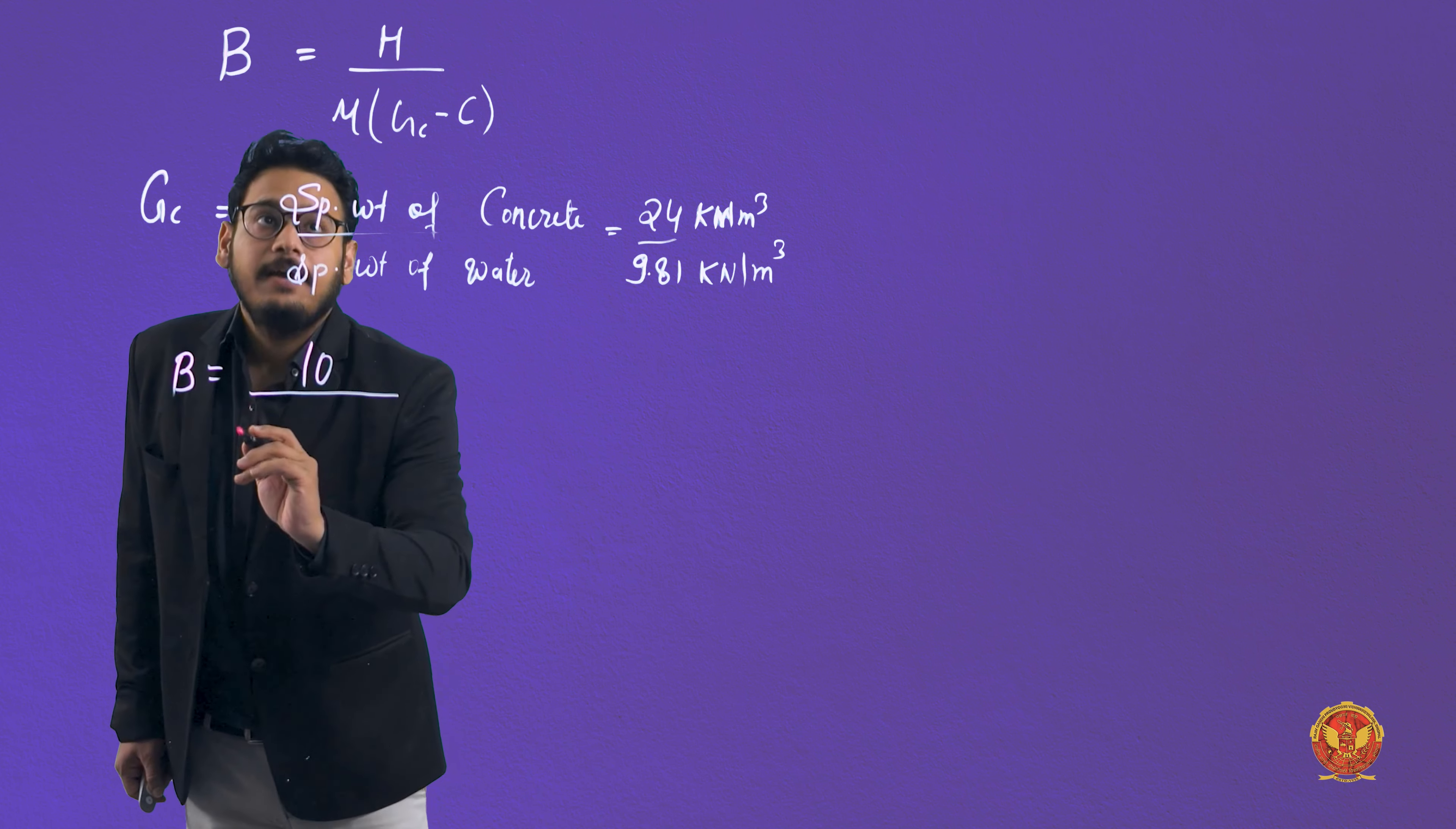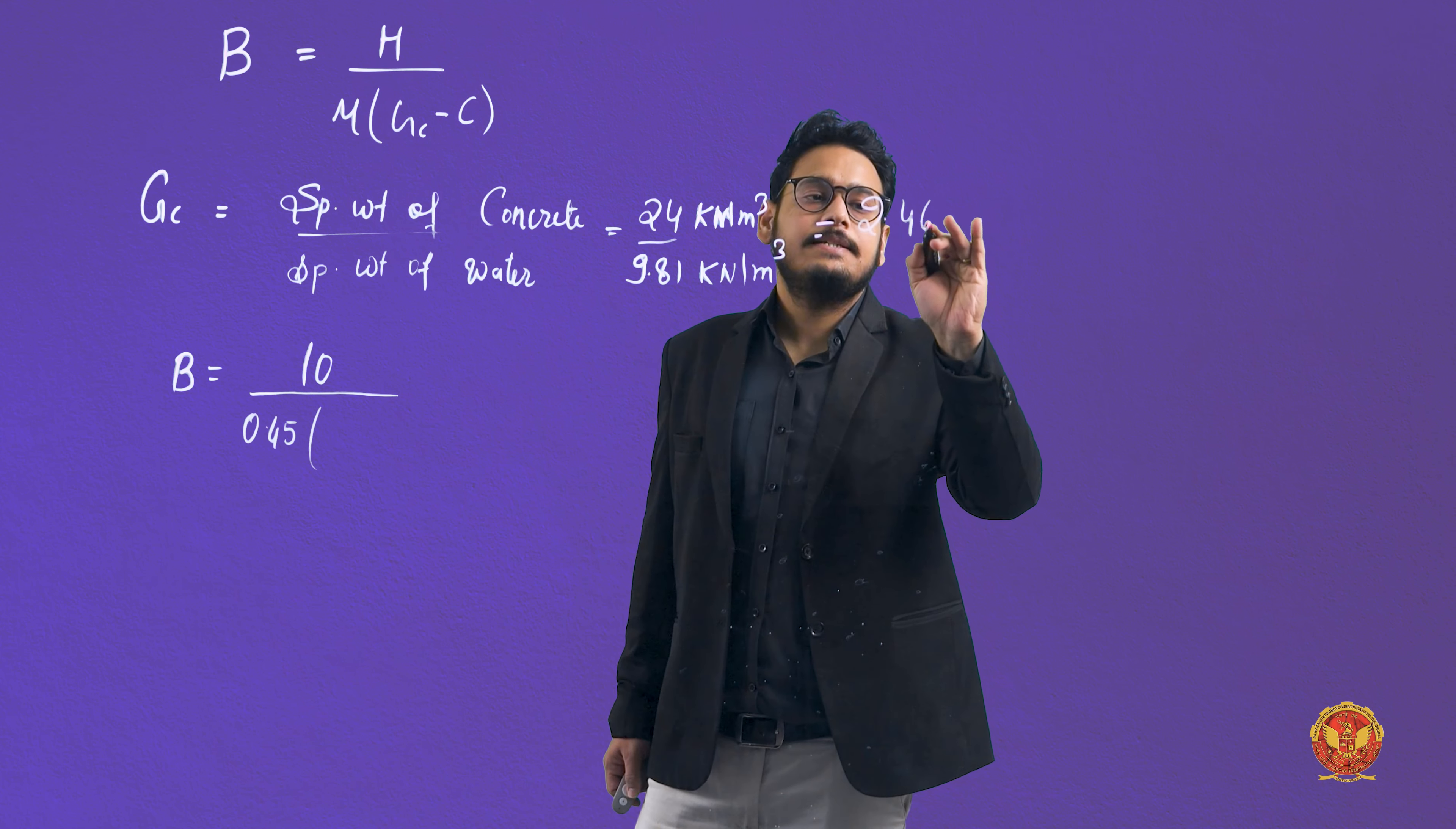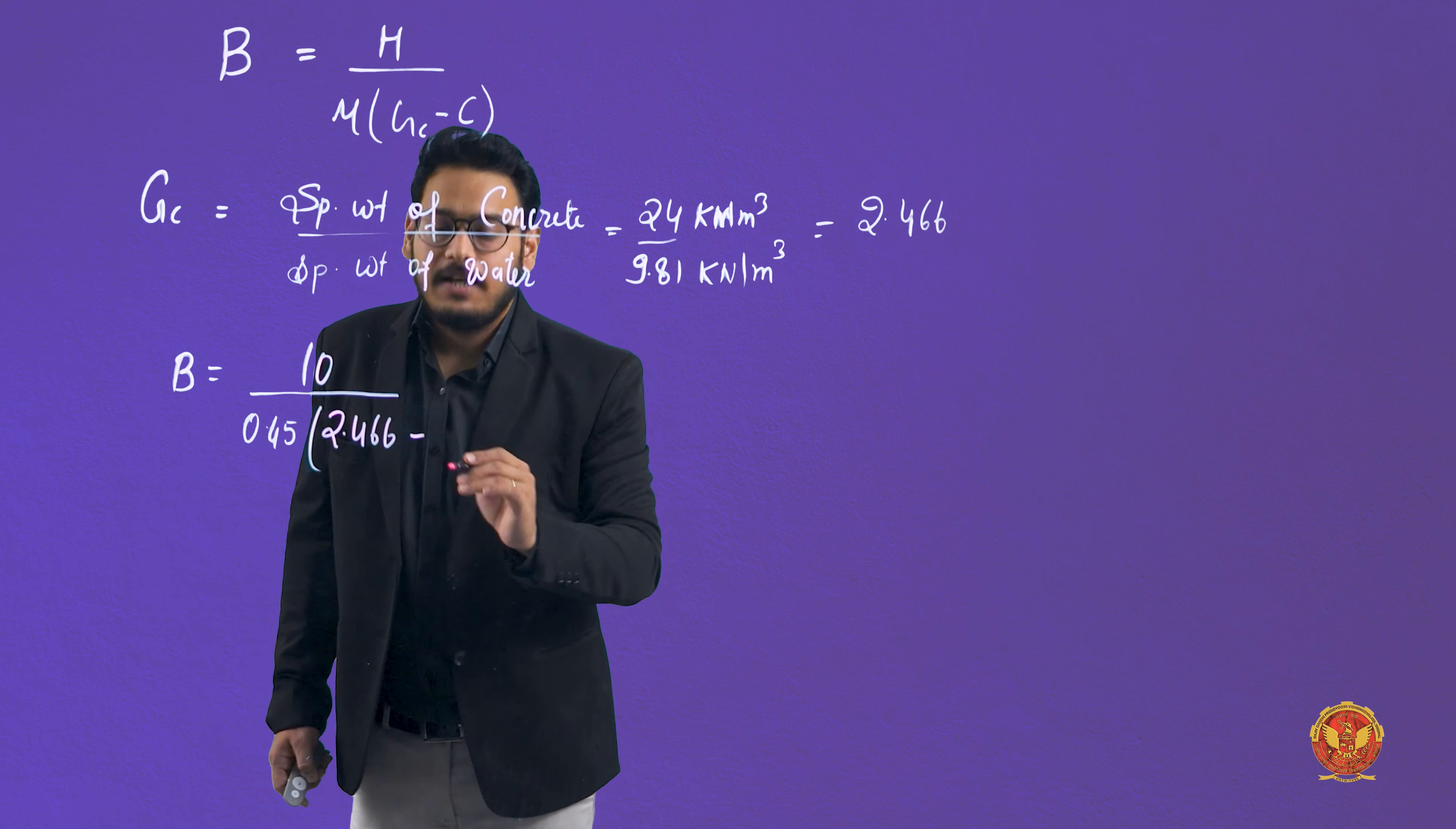So B is equal to H. Here H given is 10. Mu is given as 0.45 in the question. Gc we calculated is 2.466. Then Gc minus C, where C is 1.